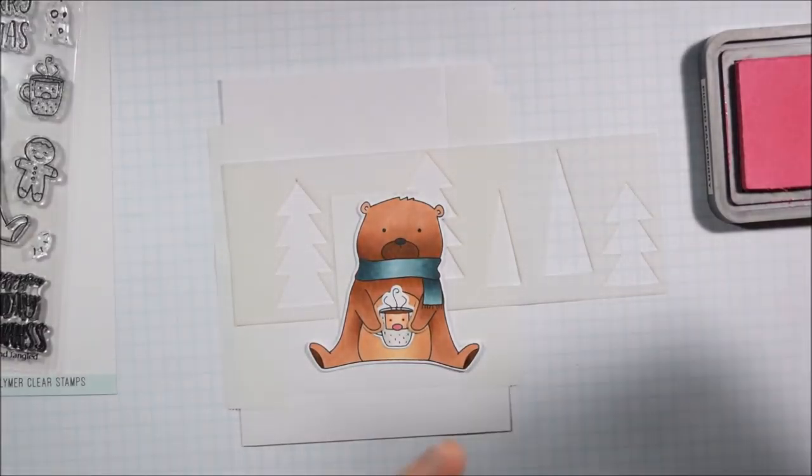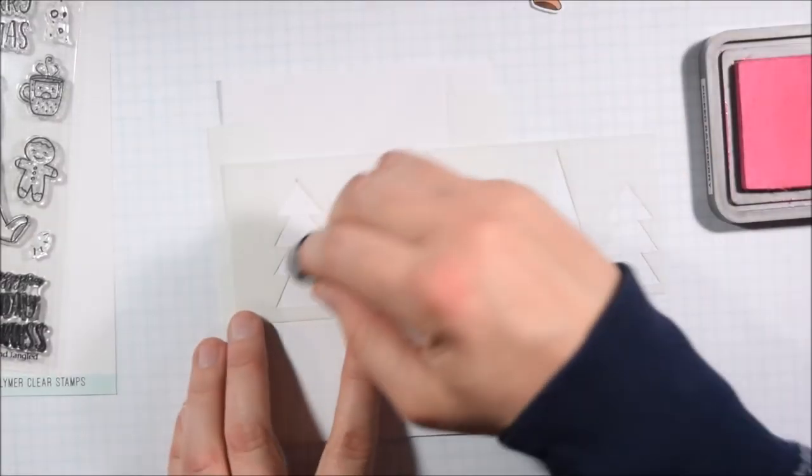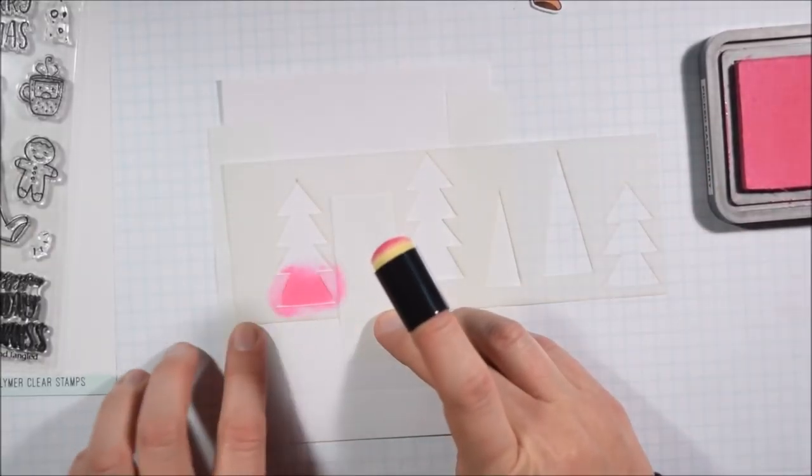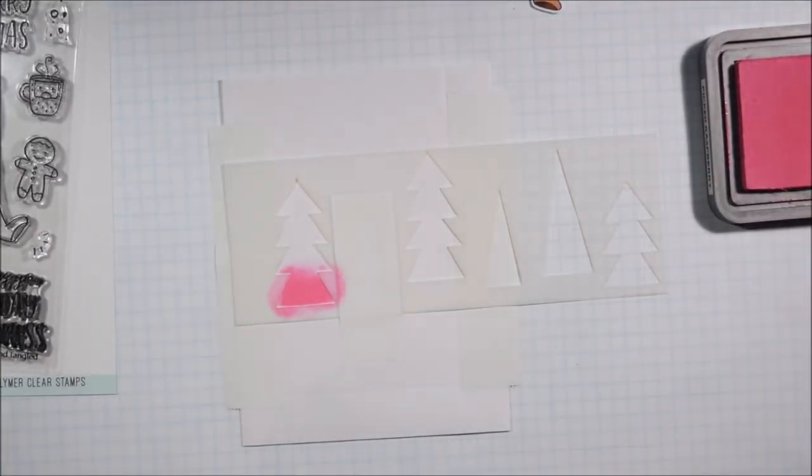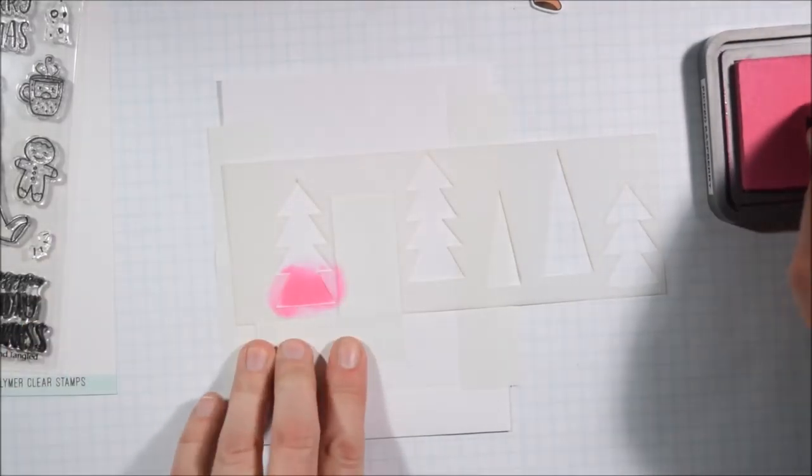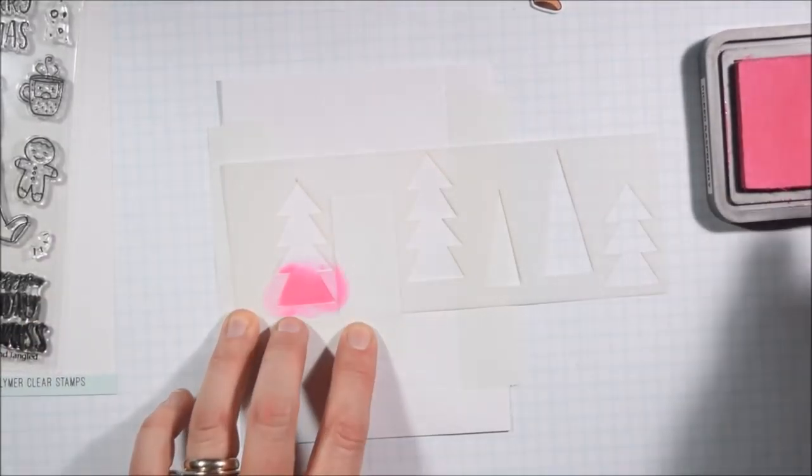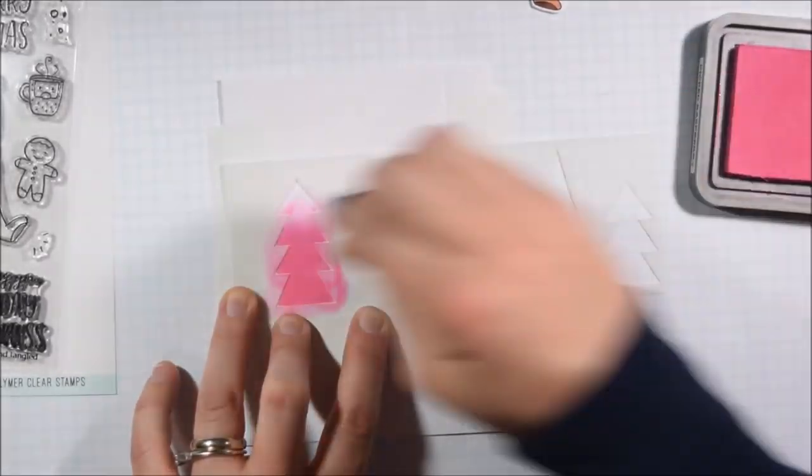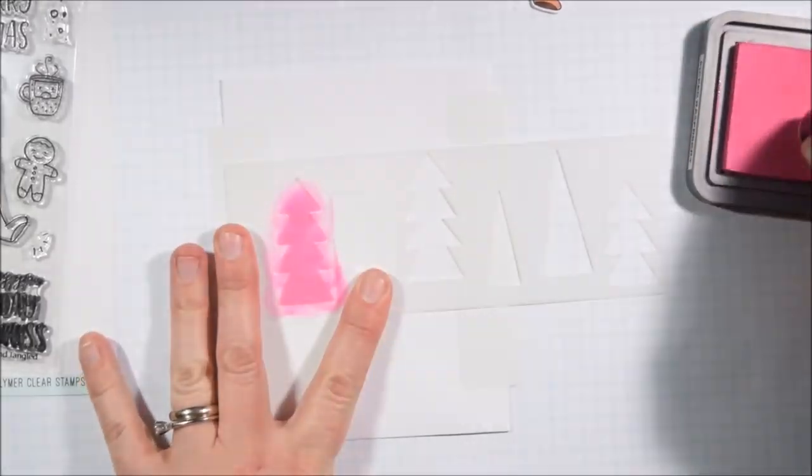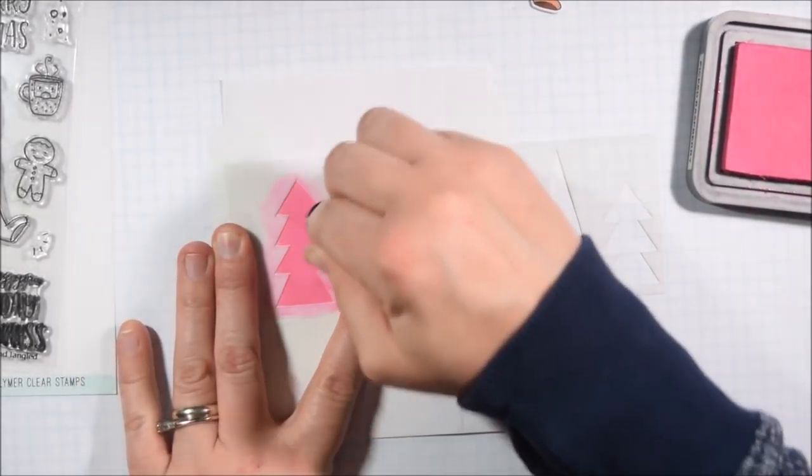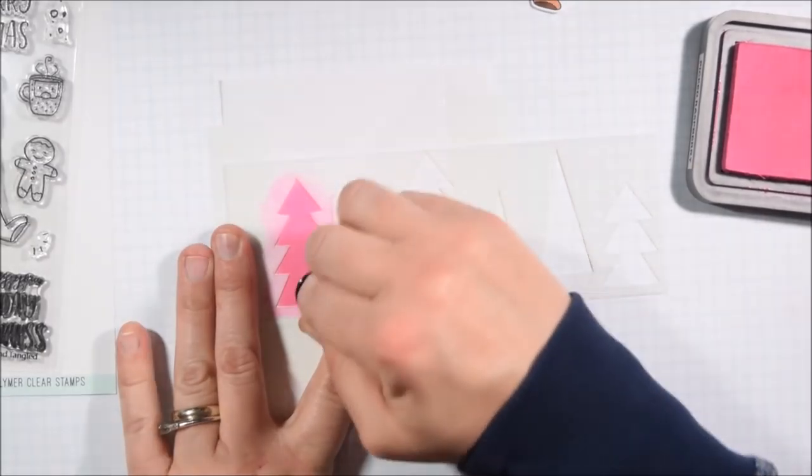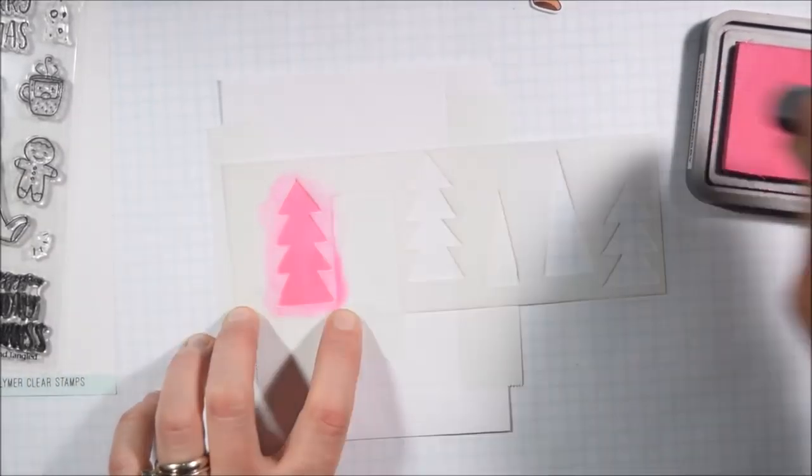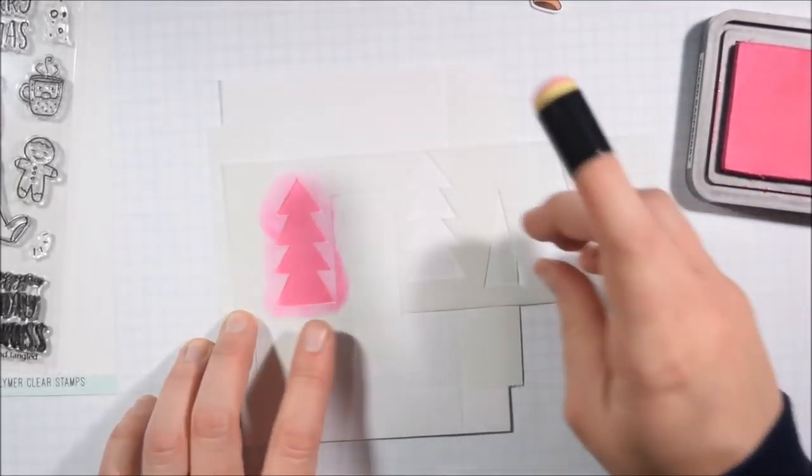And because I'm only inking one tree at a time, I want to use a smaller sponge dauber and not my Tim Holtz round blending tool that I use a lot with my distress inks. I'm using these finger daubers from scrapbook.com. Recently they were featuring you got 3 free finger daubers with every order for a while, you might want to check it out see if that's still going on. But if not, they have a really good price on the finger daubers and it allows you to give a little bit more control on a stencil application.